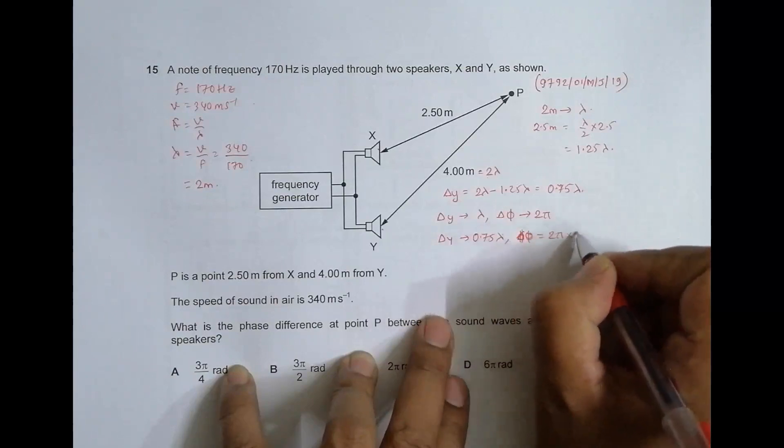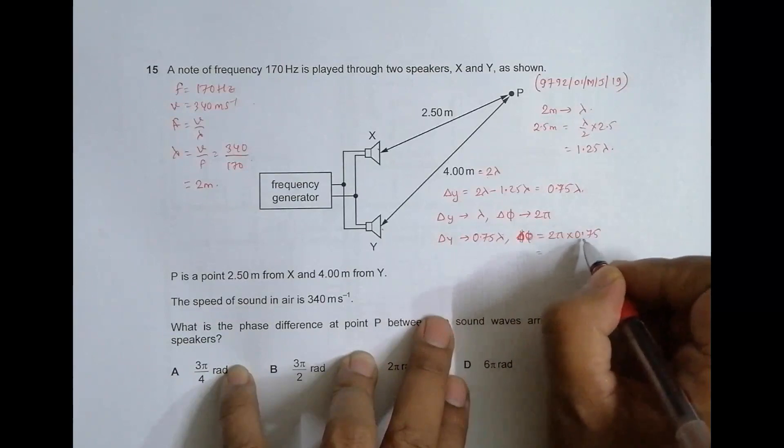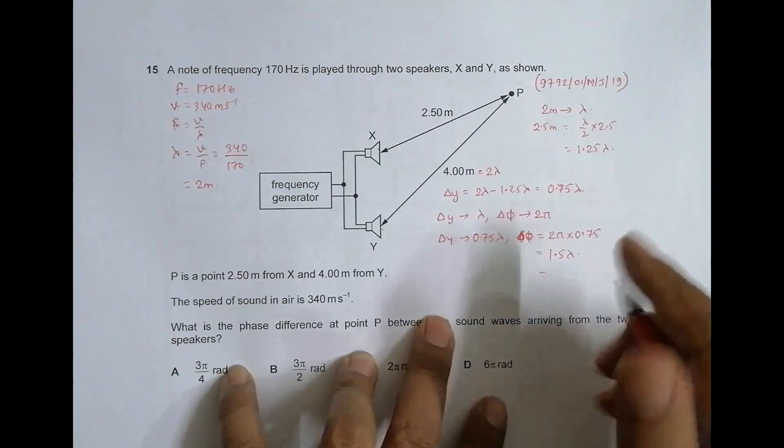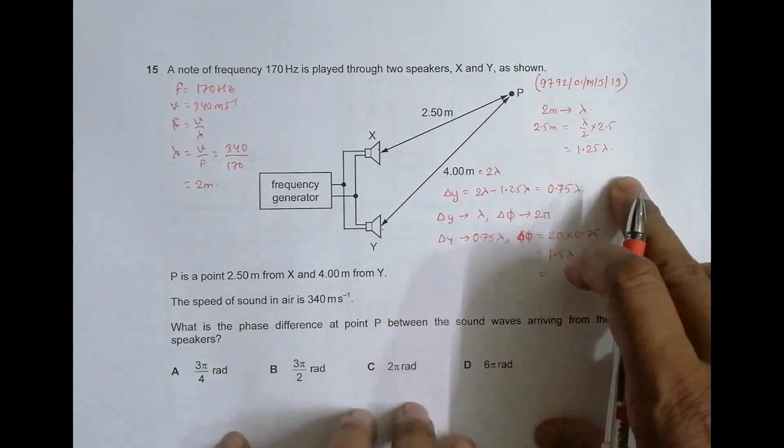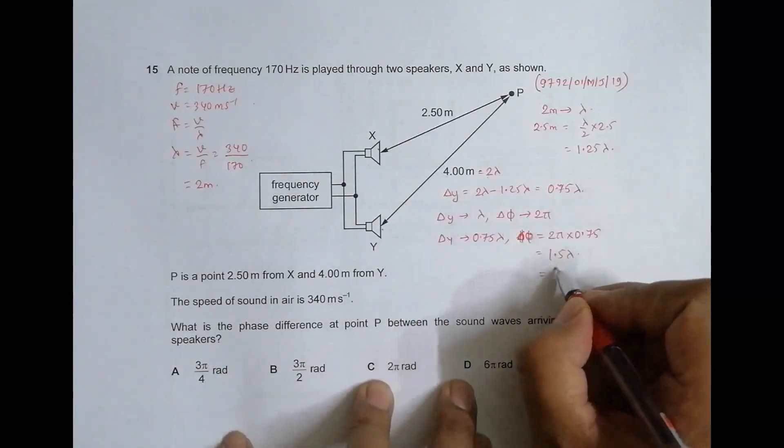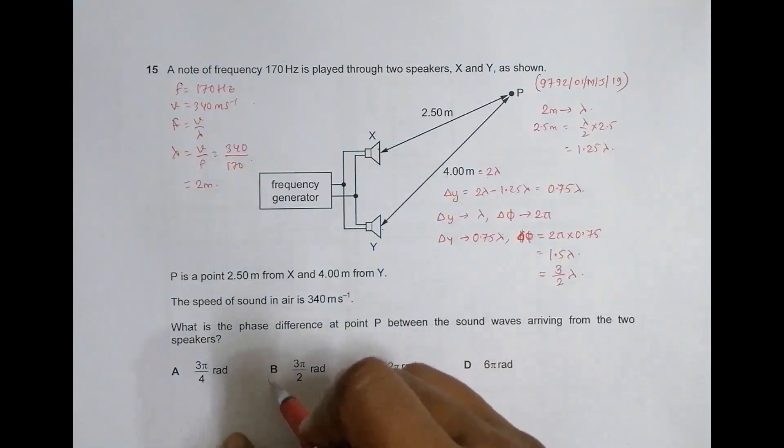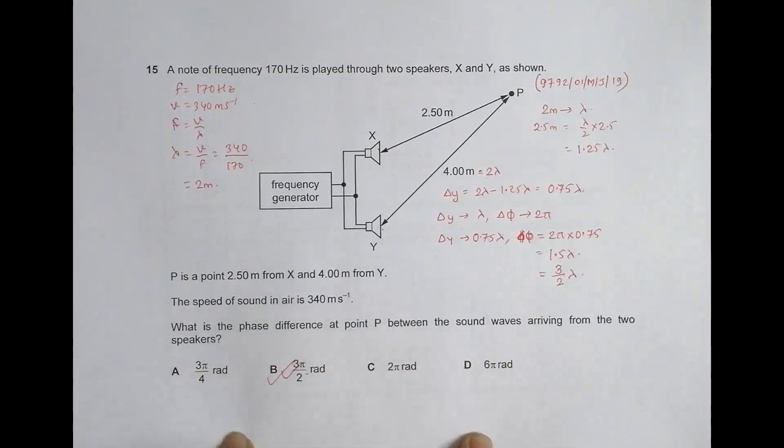2 pi times 0.75, which equals 1.5 pi. Since we have all the choices in fraction form, let's change this into fractions, so 1.5 becomes 3 by 2 times pi. Choice number B comes to be the correct choice.